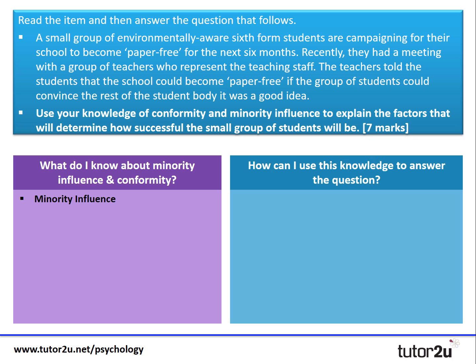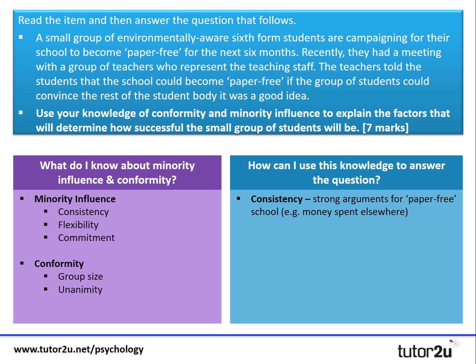So what do we know about minority influence? There are three key factors: consistency, flexibility, and commitment. In terms of conformity, what do we know about how it might affect whether a group will be successful? There are a variety of factors, but the two I might include are group size and unanimity.